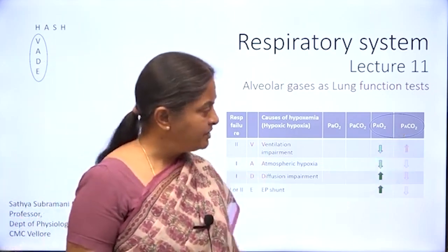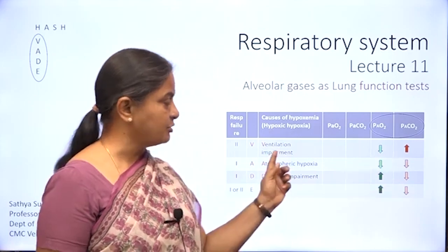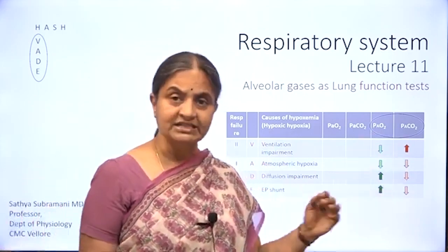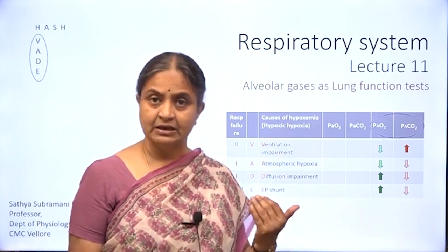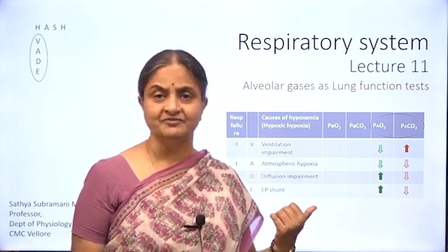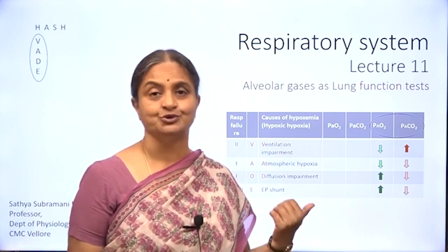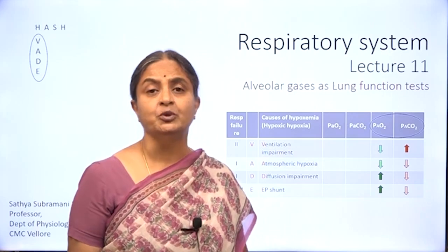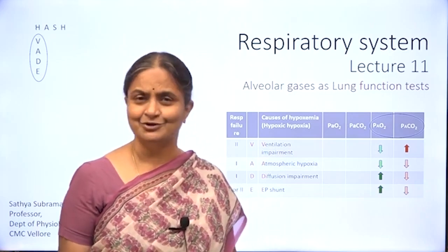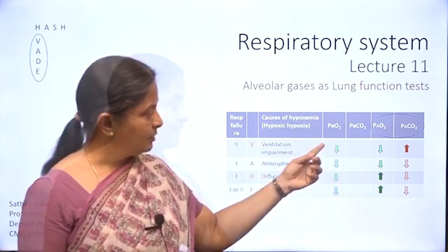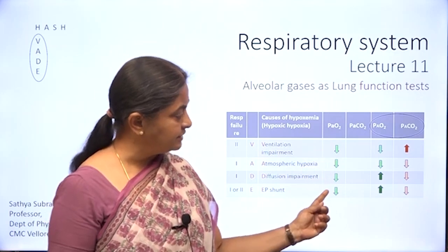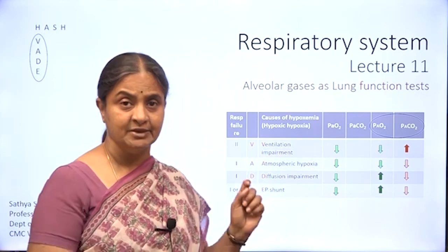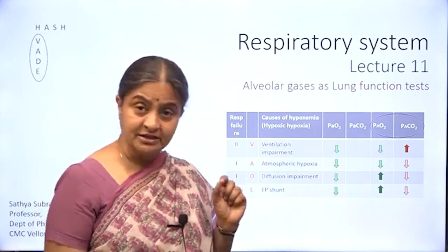Alveolar carbon dioxide is increased only in ventilation impairment. If we could estimate alveolar gases — and in fact it is a very non-invasive procedure and is quite easy to do — just that the machine is not widely available. If you look at arterial oxygen saturation, for which you need to take an arterial blood gas sample, it is an invasive procedure.